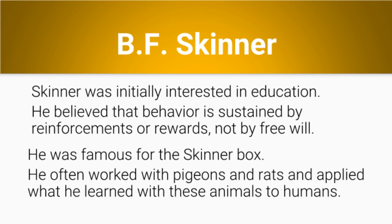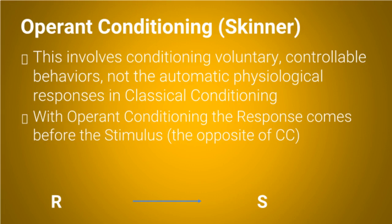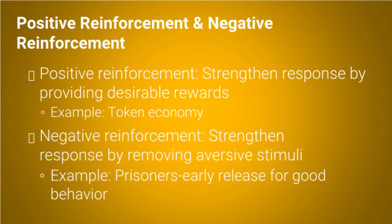Operant conditioning involves conditioning voluntary, controllable behaviors, not the automatic physiological responses found in classical conditioning. With operant conditioning, the response comes before the stimulus — the opposite of classical conditioning. Positive reinforcement strengthens a response by providing desirable rewards; an example is the token economy. Negative reinforcement strengthens a response by removing aversive stimuli; an example would be a prisoner's early release for good behavior.